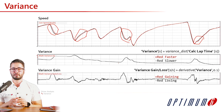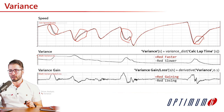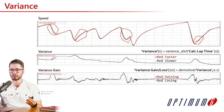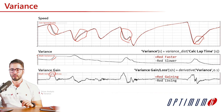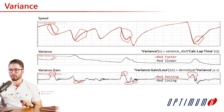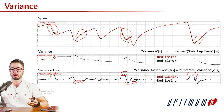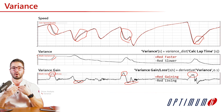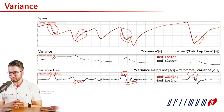An even more streamlined approach is variance gain — the derivative of variance. This gives an instantaneous measurement of how much time a driver is losing in a specific section. You can immediately see sections where a driver is losing a lot of time and sections where they are gaining. You went from a slow, hard-to-quantify comparison to a very streamlined and quick analysis. The equations are: variance between two channels in terms of distance, and the derivative of that channel.